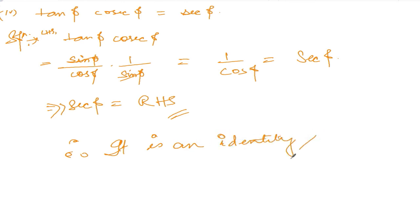It is an identity if left-hand side is equal to right-hand side, and if they are not equal then it is not an identity. That's all, it is simple. I hope you understood this much. Thank you so much, we will meet in the next video.